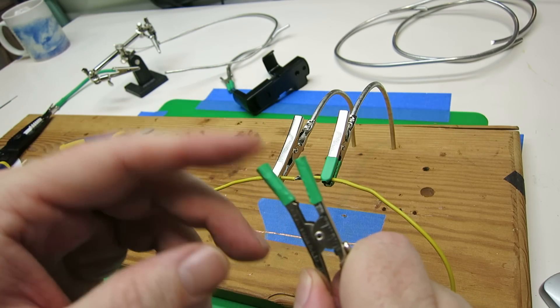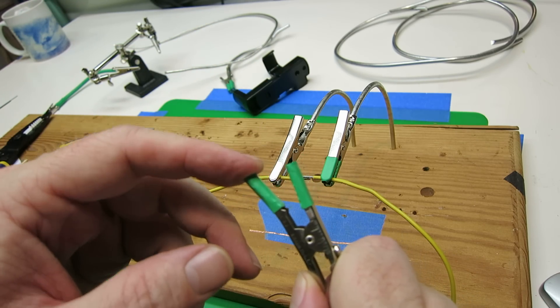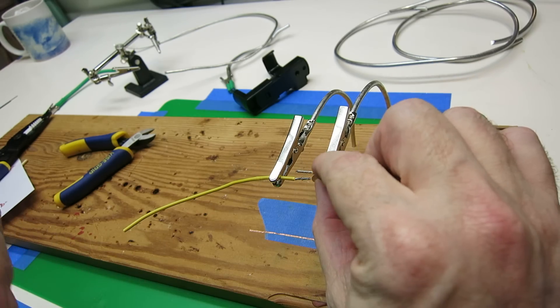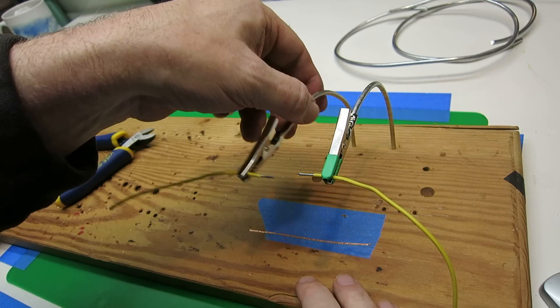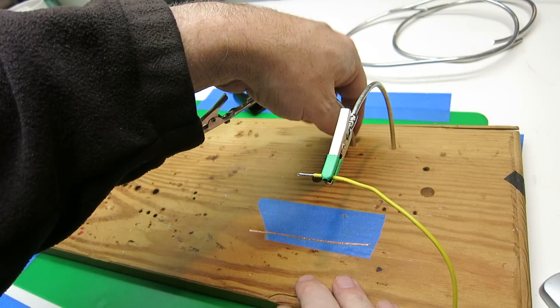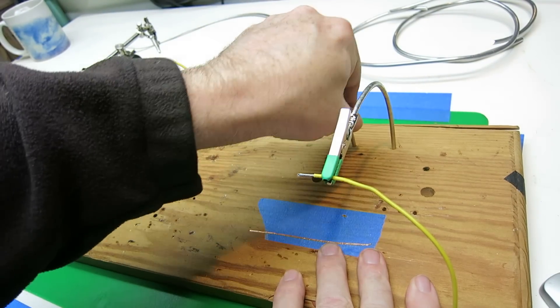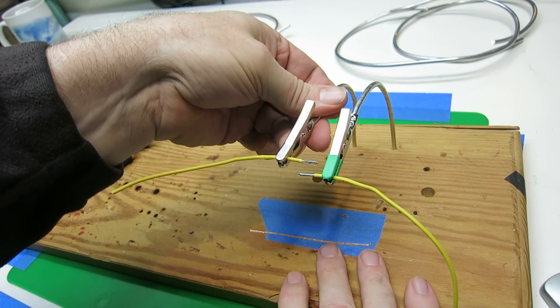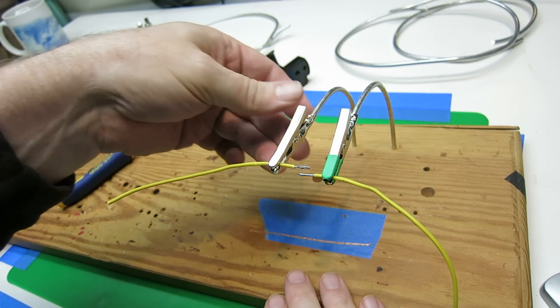I put some heat shrink tube onto the alligator clips so that it wouldn't bite into the wire. You can see this one here, I've got the heat shrink done, and then I just drilled some holes. I think a 9/64th inch hole was what I used, and you can see it's just really nice. It just sticks right in there and lines everything up.